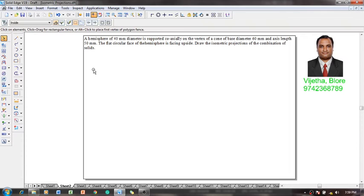Hi guys, myself Pujeta Vadhan, and in this video session we are going to discuss an example problem on isometric projections. The problem is like this: a hemisphere of 40 millimeter diameter is supported coaxially